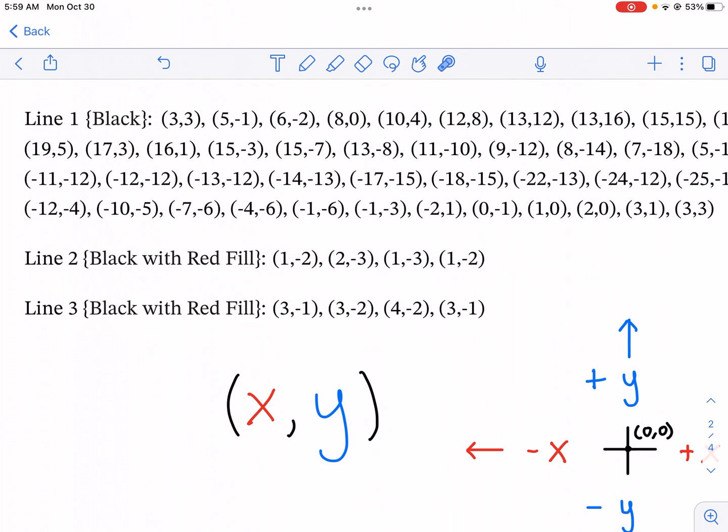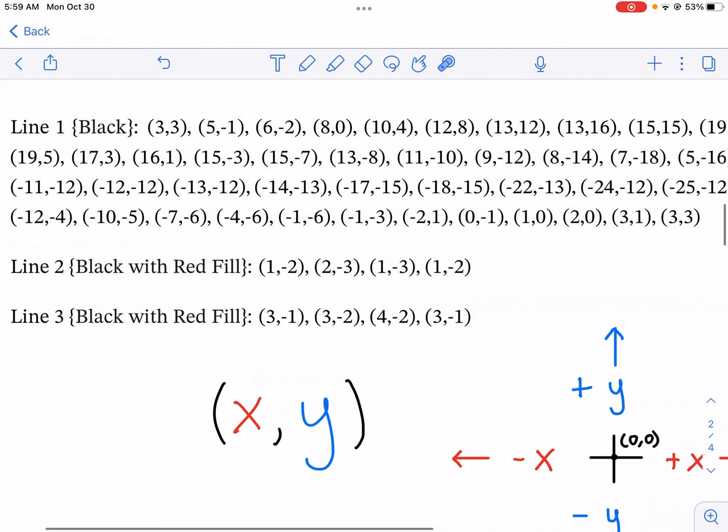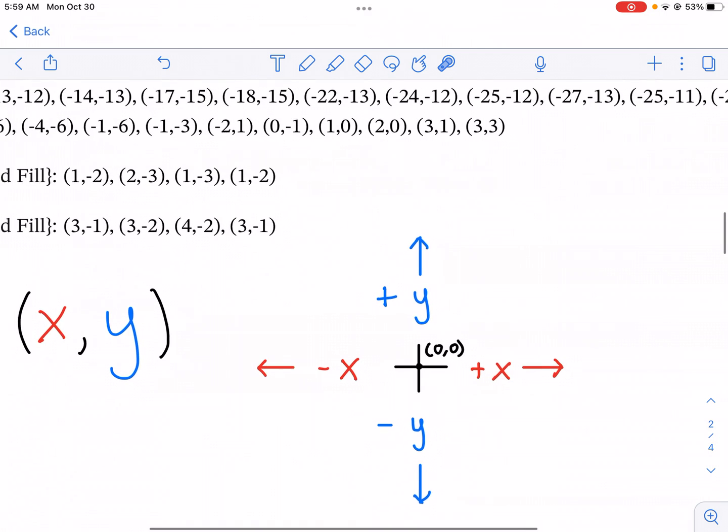So let's start with how do we read these coordinate points. The first one says (3,3). The first number is your x coordinate and the second number, which is also 3, is your y coordinate.